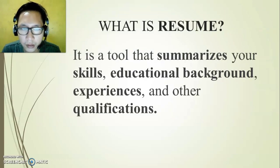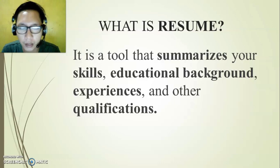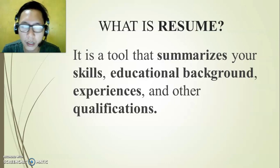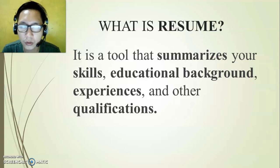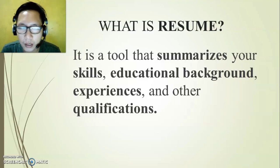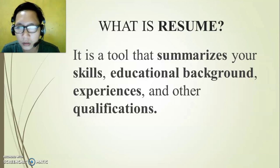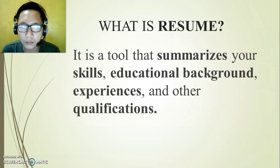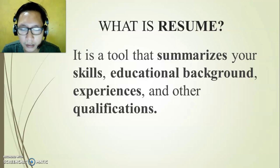A resume summarizes your skills, educational background, experiences, and other qualifications. It is also known as Curriculum Vitae, but the CV is a more detailed type. A CV includes height, weight, skin complexion, eye color, and hair color. Unlike the resume, those details are not needed — in a resume, we only include the most important things.